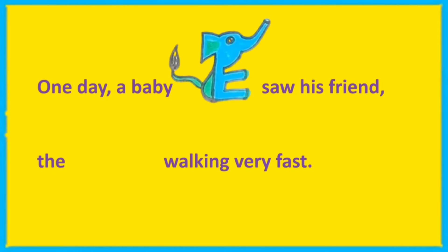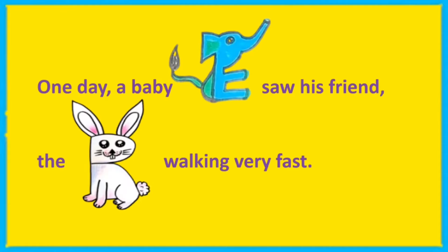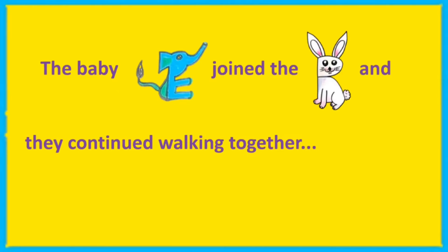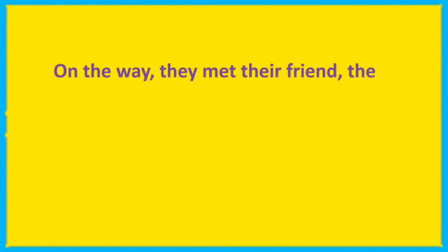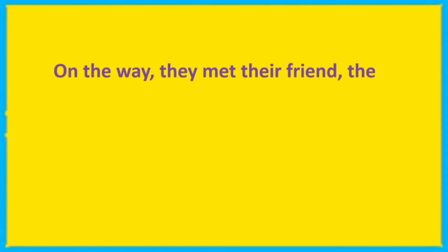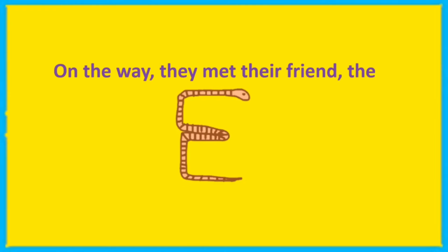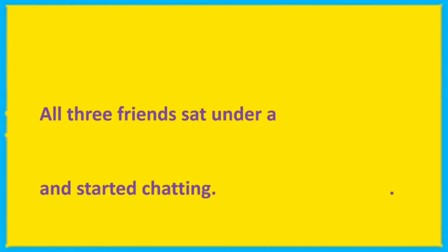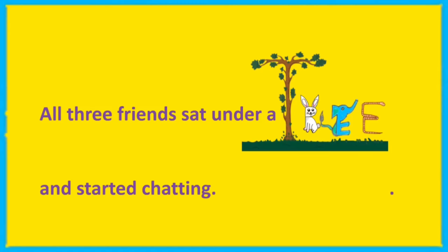Let's begin a story. One day a baby elephant saw his friend rabbit walking very fast. The baby elephant joined the rabbit and they continued walking together. On the way they met their friend the earthworm. Next, all three friends sat under a tree and started chatting.